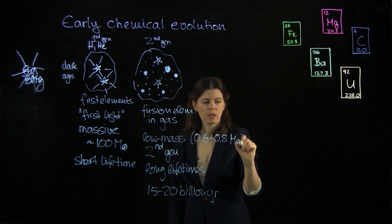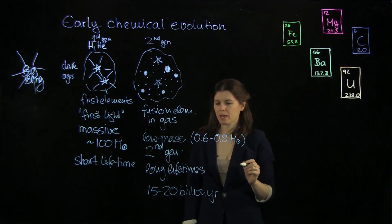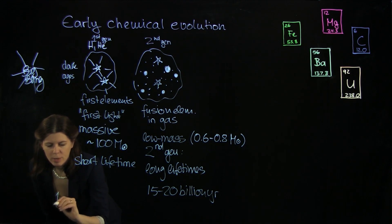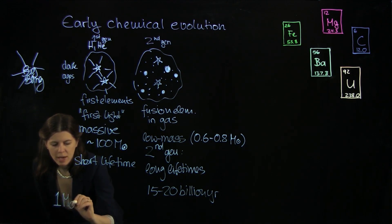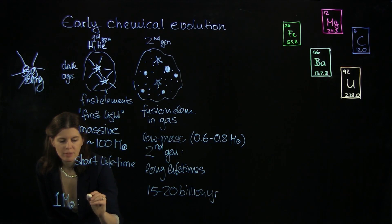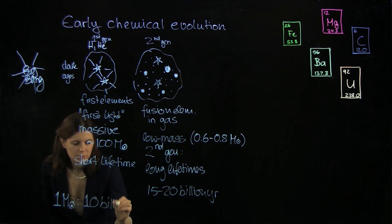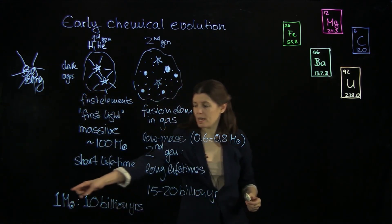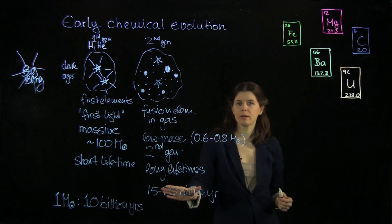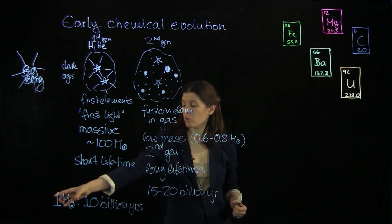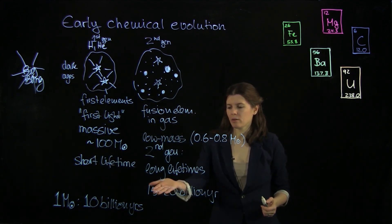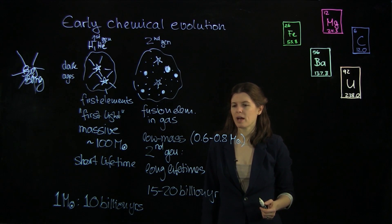So less massive than our sun. And as a good rule of thumb I can write this here: the Sun has by definition one solar mass and that has a lifetime of 10 billion years. And so everything that has less mass will have a longer lifetime and everything that is more massive than one solar mass will have a much shorter lifetime.